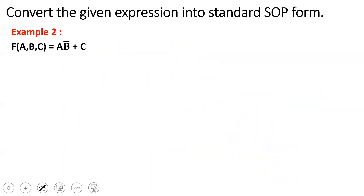Here is an example. We will take F = AB̄ + C, again F of A, B, C, which means we have three input variables. If we look at AB̄, the C variable is missing. In the next term C, both A and B are missing — so two variables are missing. As usual, for AB̄, C is missing, so we multiply by (C + C̄).